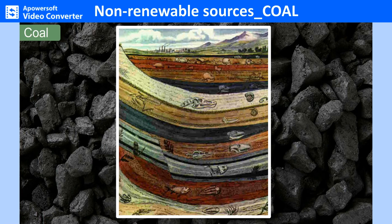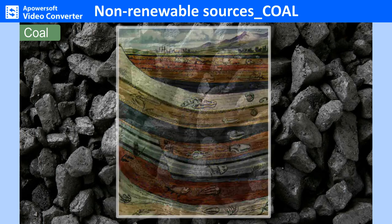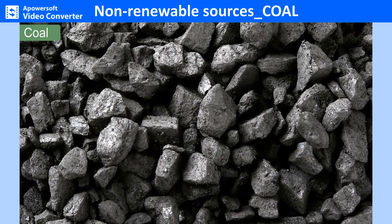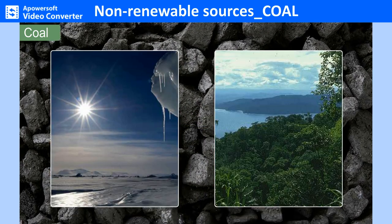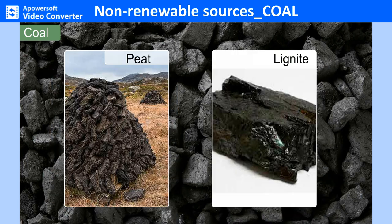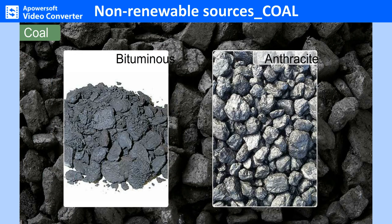Coal is a fossil fuel found in layers of varying thickness in beds of sedimentary rocks. Its distribution is highly uneven in many parts of the world. It is solid and black or brown in color. Coal is widely used to generate thermal electricity. Different climatic conditions, types of vegetation and the time factor cause the formation of different kinds of coal. Peat, Lignite, Bituminous and Anthracite are the four main types of coal.